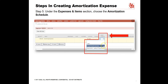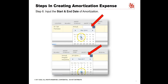In the Expenses and Items section, click on the drop-down arrow of the Amortization Schedule. Choose 'Annual Prepaid Insurance' for this example. Be sure to click on the appropriate start and end date of the amortization.